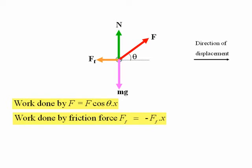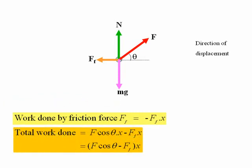Since work is a scalar quantity, the total work done is the algebraic sum of the individual works done. So the total work done is equal to F cos theta X minus FF X, which we can then take X out of the bracket, and that's F cos theta minus FF times X.